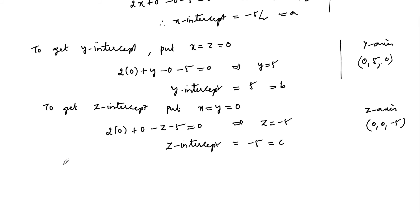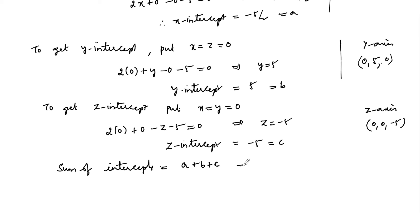Therefore, the sum of the three intercepts is a + b + c, which is equal to -5/2 + 5 + (-5). The answer is -5/2. But wait — let us re-check: here for the x-intercept, 2x - 5 = 0 gives x = +5/2.